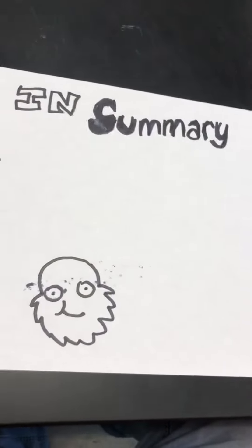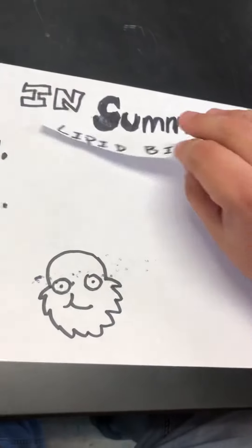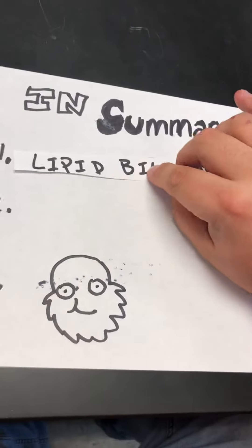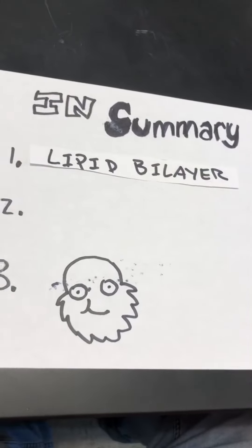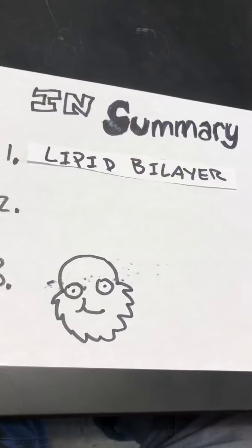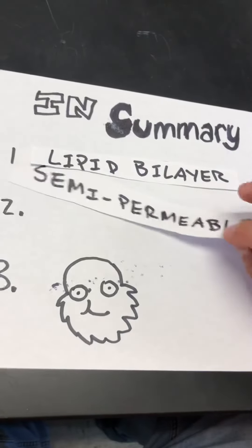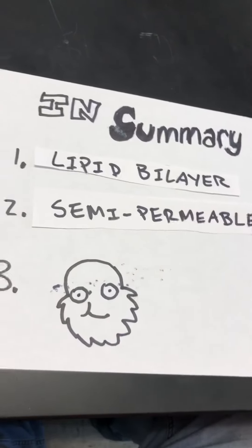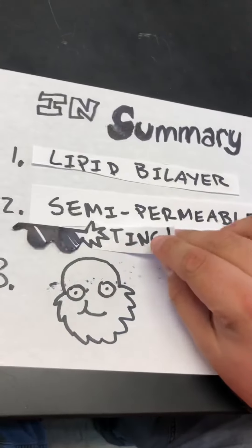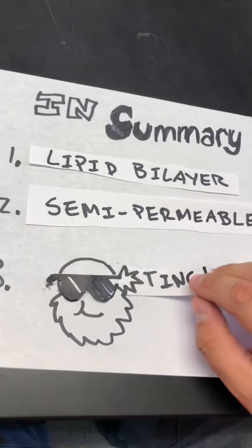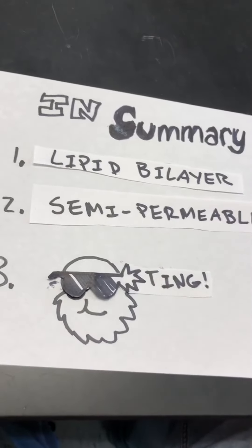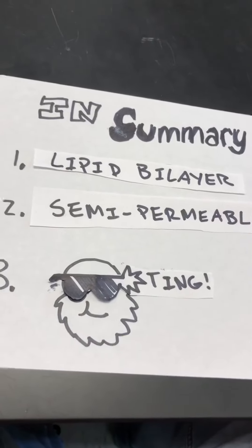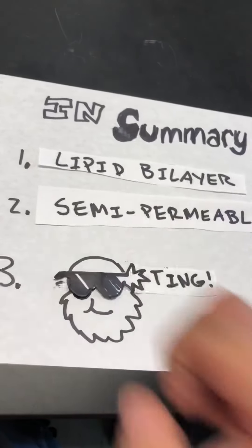In summary, cell membranes are made up of a lipid bilayer. Those lipid bilayers are semi-permeable. That's all for today, catch you guys later.